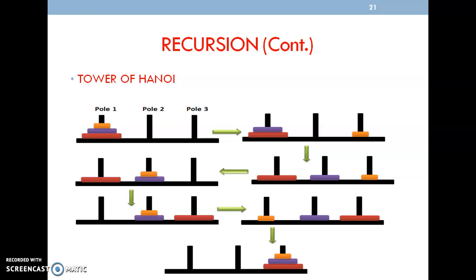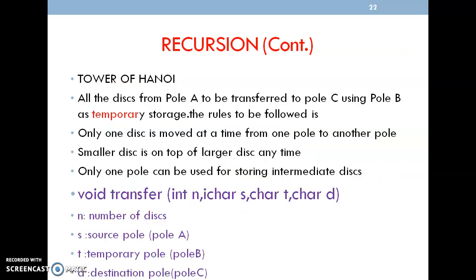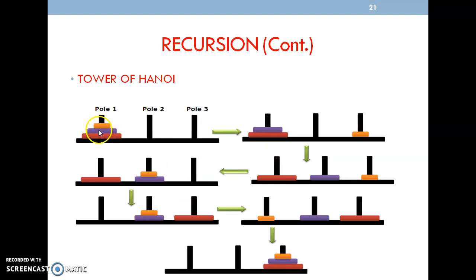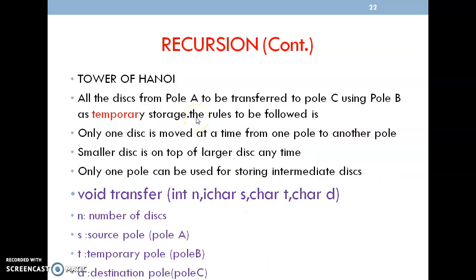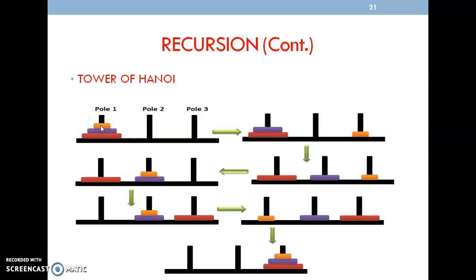The next important function is the Tower of Hanoi. In this, we use three poles to transfer three discs from the first pole to the third pole. Pole 2 is considered as a temporary or intermediate pole to help transfer all the discs from pole 1 to pole 3. The first condition is: only one disc is moved at a time from one pole to another. You cannot directly shift two or more discs from pole 1 to pole 3.